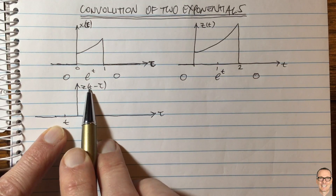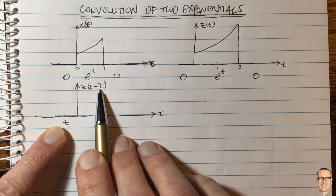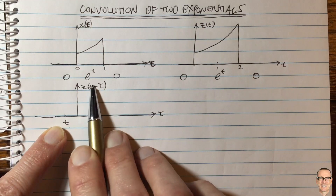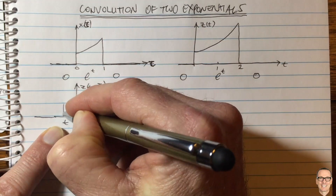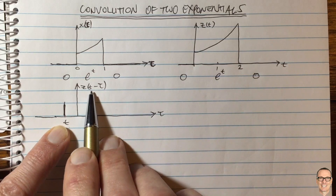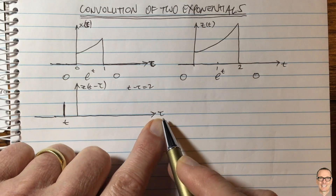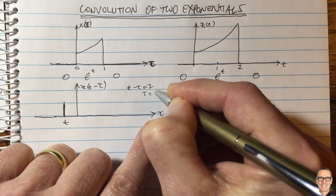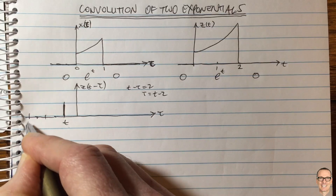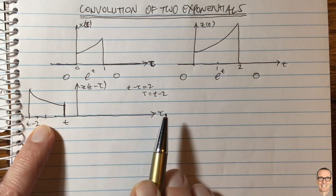Let's draw z of t minus tau as a function of tau. When the thing in the brackets equals zero — that is, when tau equals t — we have that part of the graph plotted there. When the thing in the brackets equals two, we need t minus tau equals two, so tau equals t minus two, which is two to the left of t. That's where that part of the graph moves to. So this is z of t minus tau plotted as a function of tau.